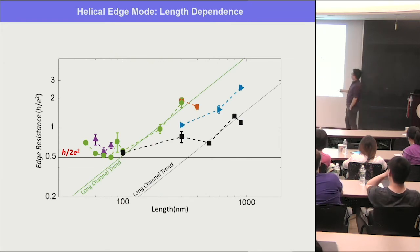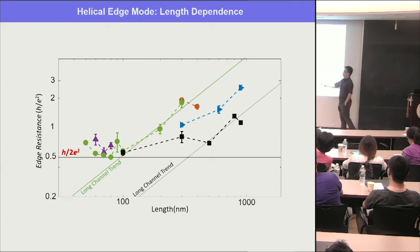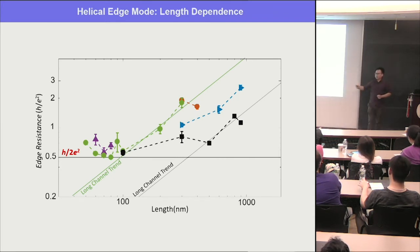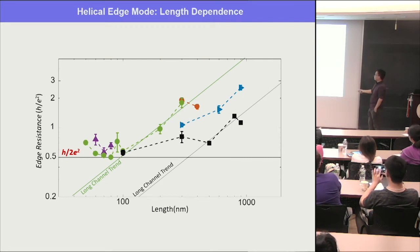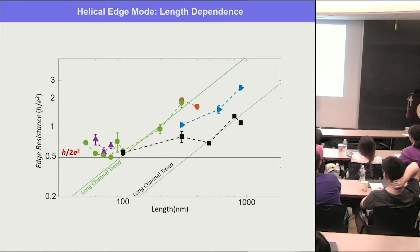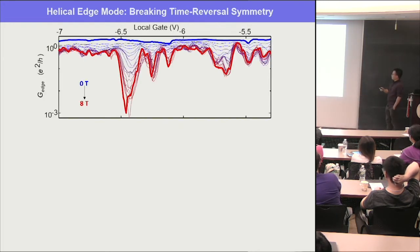The length-dependent study shows: different colors represent different devices, each with different local gates. As you increase the channel length, the edge resistance increases and eventually becomes ohmic — resistance linear to L. But if you reduce the length to a very short limit, you saturate and never go below h/2e² for two edges. This demonstrates you are in the ballistic regime with quantized conductance.